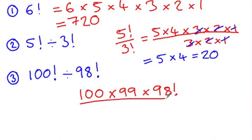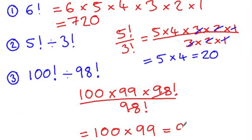And then our denominator here is also 98 factorial. These two things will cancel, leaving us with 100 multiplied by 99, which is 9900.